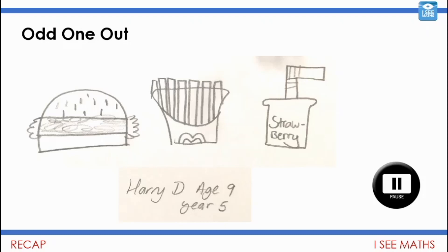Now I'm sure you'll come up with all kinds of different answers for this one. I'll tell you what I went for. I thought well the burger is the odd one out because the other ones are in cardboard. I had to really think about why the chips were the odd one out. What I went for in the end is there are lots of them.